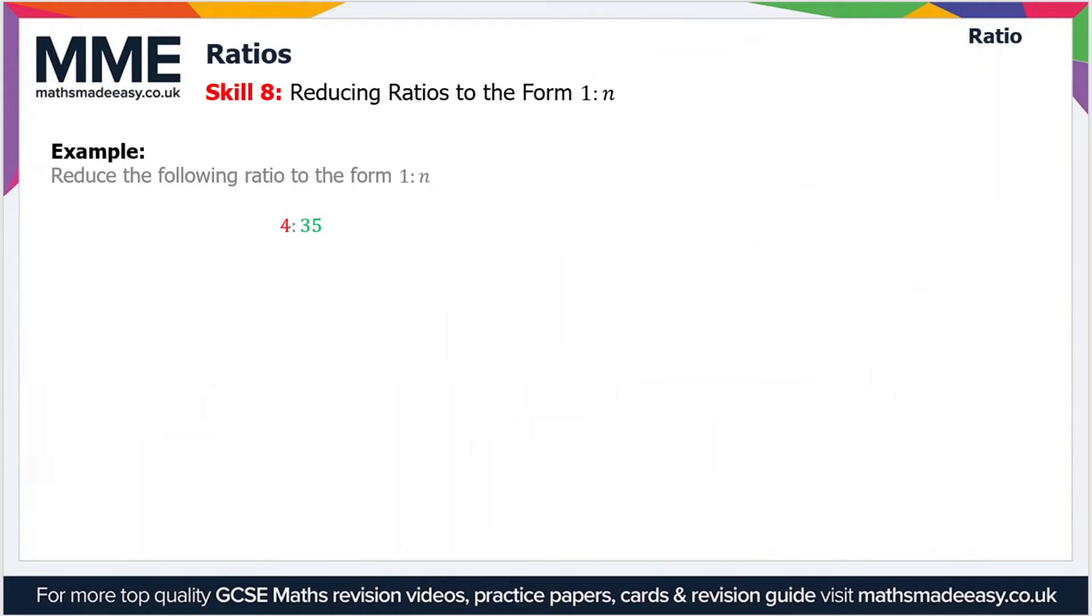Moving on, the last skill we'll look at is reducing ratios to the form 1:n. In this example, reduce the following ratio to the form 1:n. The ratio is 4:35.